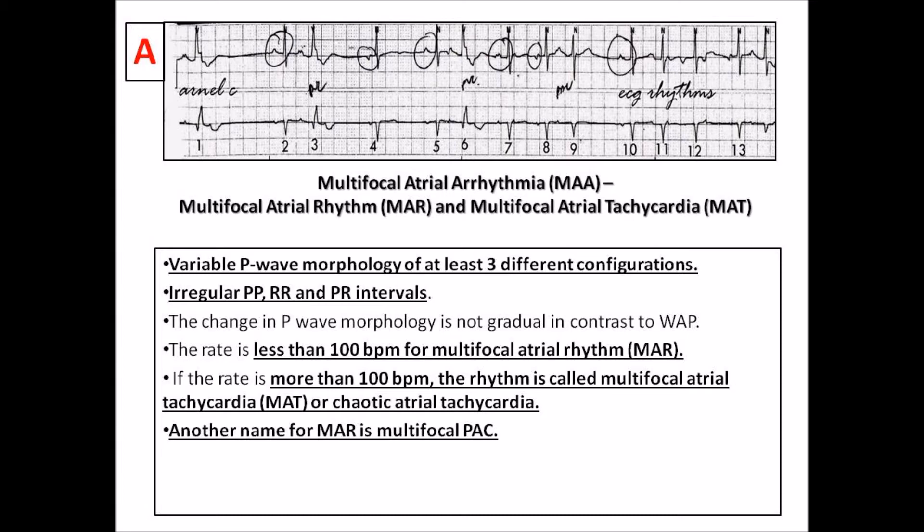The rate is less than 100 beats per minute for multifocal atrial rhythm, and if the rate is more than 100 beats per minute, it is called multifocal atrial tachycardia or chaotic atrial tachycardia. Another name for MAR, or multifocal atrial rhythm, is multifocal PAC.